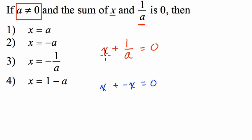And here, I notice that I have x plus something is equal to 0. So therefore, I know that 1 over a must be the equivalent of negative x. These things have to be equal. So 1 over a equals negative x.